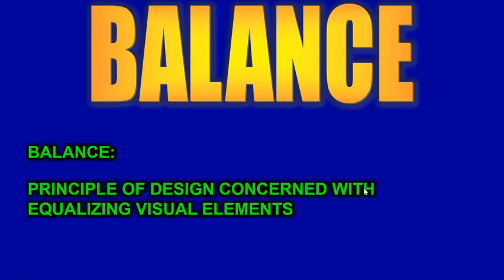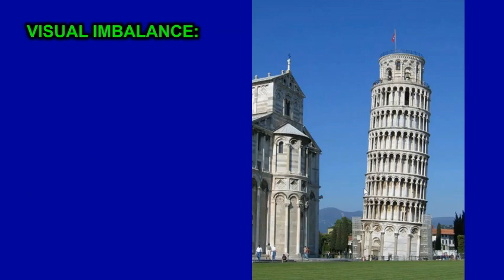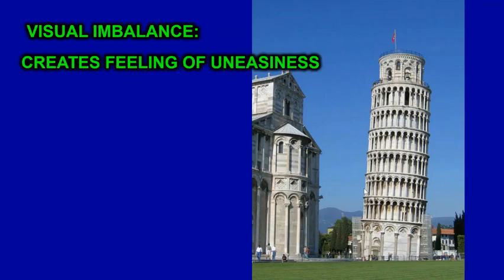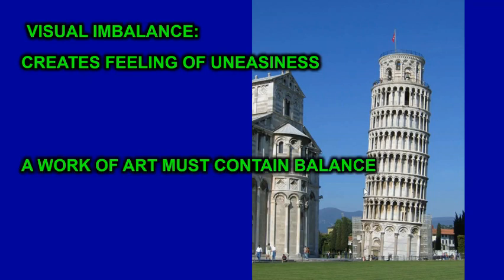Today we're going to talk about balance, which is the principle of design concerned with equalizing visual elements. Visual imbalance creates the feeling of uneasiness, like in this picture of the Leaning Tower of Pisa — it's kind of an uneasy feeling, like it's going to fall over at any second. A work of art must contain balance in order for it to look right.